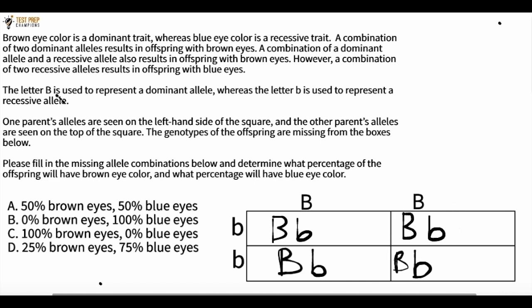All right. So it tells us here that the big B represents the dominant allele, whereas little B is used to represent the recessive allele.